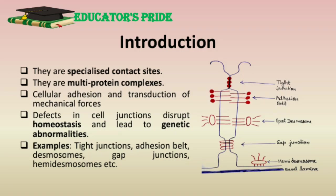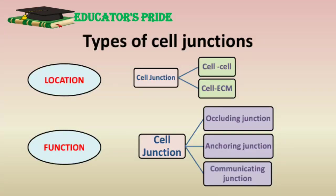Some common examples of cell junctions are tight junctions, adhesion belt, desmosomes, gap junctions, and hemidesmosomes, as shown in the figure. Cell junctions are divided on the basis of two criteria. On the basis of location, cell junctions are of two types: first, cell-to-cell junction, and second, cell-to-extracellular matrix junction. On the basis of function, cell junctions are of three types: first, occluding junction; second, anchoring junction; and third, communicating junction.